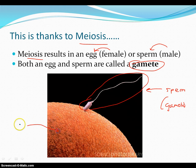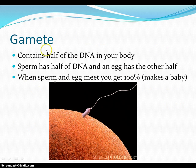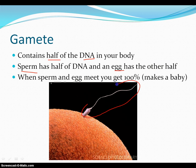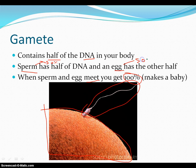This thing right here is an egg cell. That comes from a female, and that's another type of gamete. So what is a gamete? It's something that contains half of the DNA in all of your body. Sperm has half of the DNA and the egg has the other half. When sperm and egg meet, you get 100% — 50% from sperm and 50% from an egg. When they come together, you're going to get 100%. That's called making a baby.